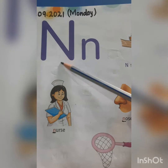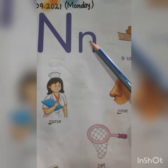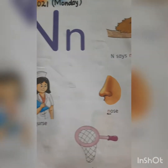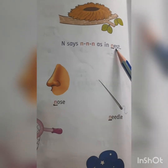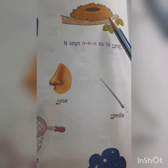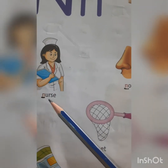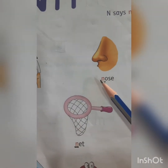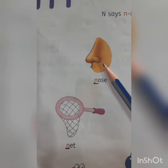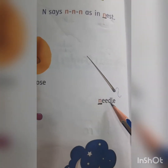Let's see the next letter. This is capital letter N. This is small letter n. The sound of letter N is 'N'. N-E-S-T. Nest. N-U-R-S-E. Nurse. N-O-S-E. Nose. N-E-E-D-L-E. Needle.